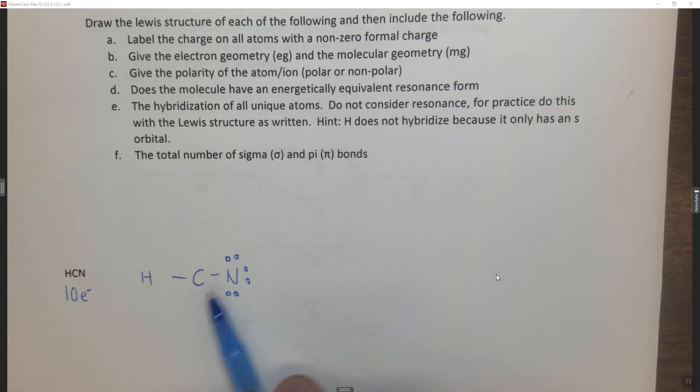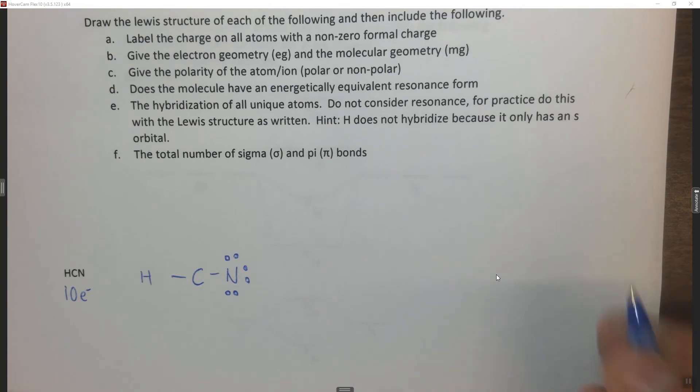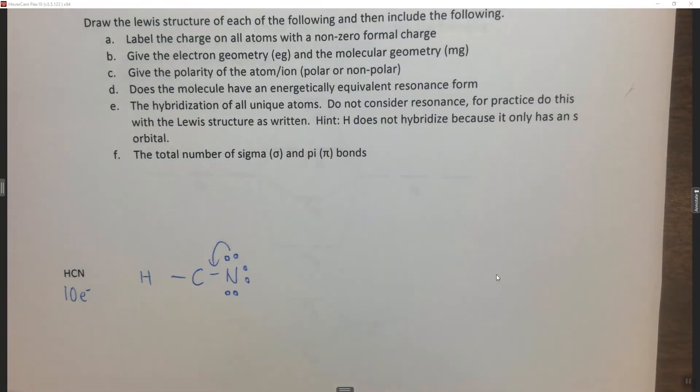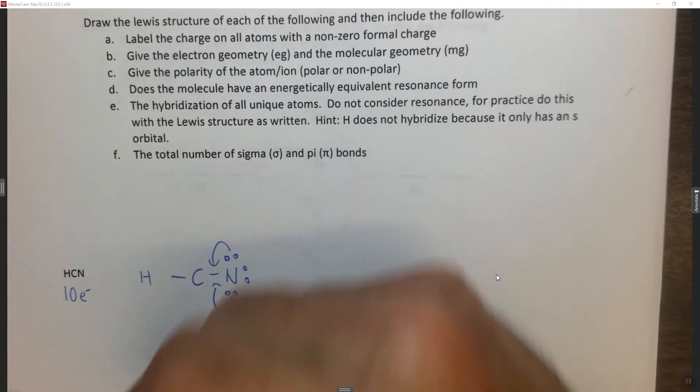Of course hydrogen doesn't want an octet, but carbon does. So how can I do that? Well rule 3a is going to tell us to make multiple bonds. If I make a double bond that'll still put 2, 4, 6 electrons around nitrogen. So I have to make a triple bond in order to make this work.